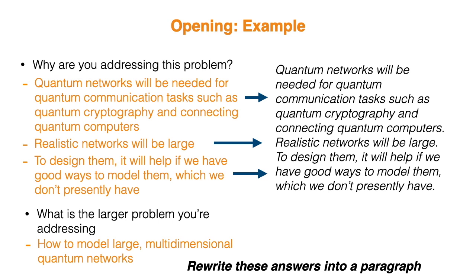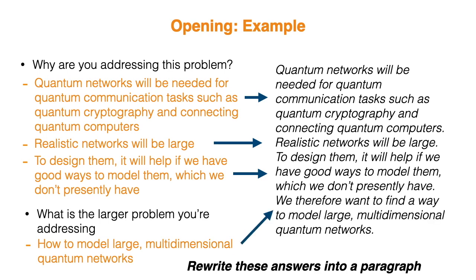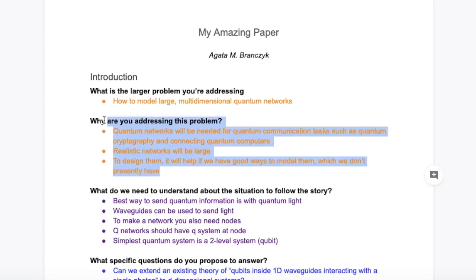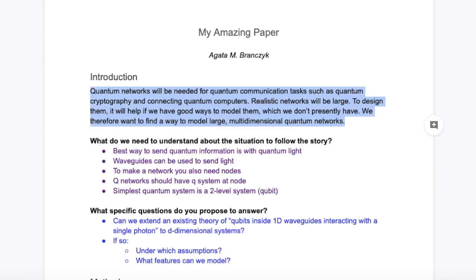Here I will actually have to do that with the fourth sentence, which is now going to say: we therefore want to find a way to model large multidimensional quantum networks. And now that I have something that resembles a paragraph, I'm going to copy it and replace the questions in my document with this paragraph.